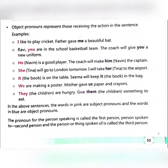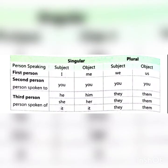Now, the pronoun for the person speaking is called the first person. The person spoken to is the second person. And the person or thing spoken of is called the third person. Now let us look at the table. We see singular and plural.